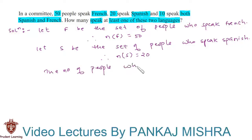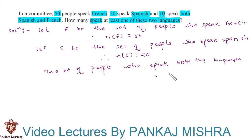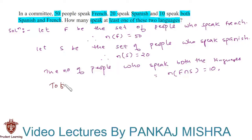The number of people who speak both languages equals 10, so we'll say that the number of elements in F intersection S equals 10. With this information we have to find the number of people who can speak at least one of the two languages — that is, we have to find the number of elements in F union S.